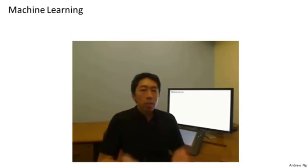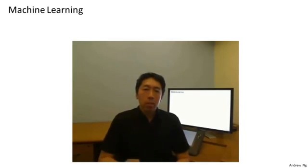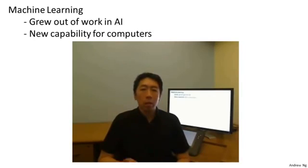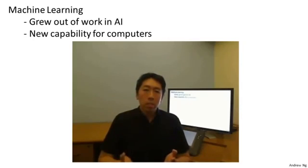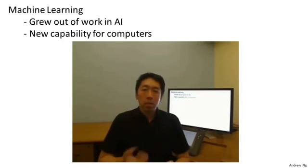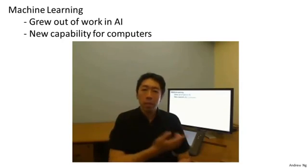So why is machine learning so prevalent today? It turns out that machine learning is a field that had grown out of the field of AI, or artificial intelligence. We wanted to build intelligent machines, and it turns out that there are a few basic things that we could program a machine to do, such as how to find the shortest path from A to B.